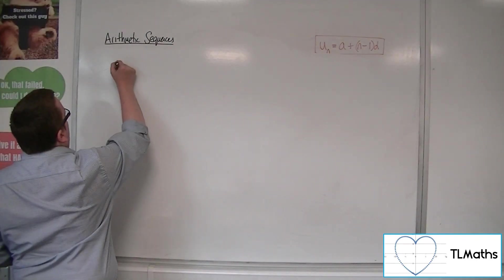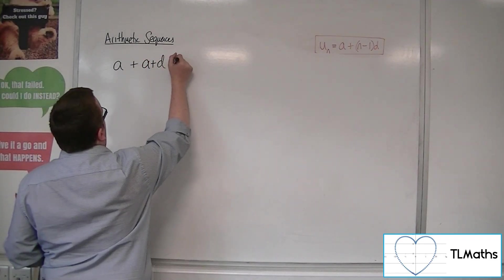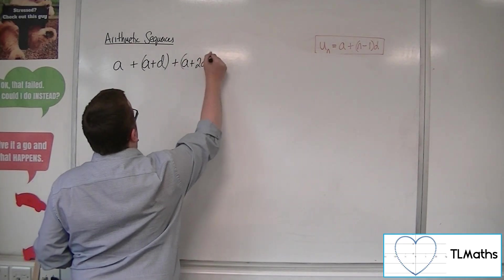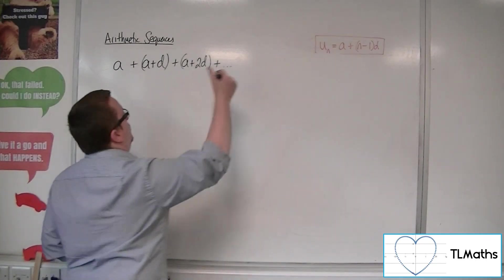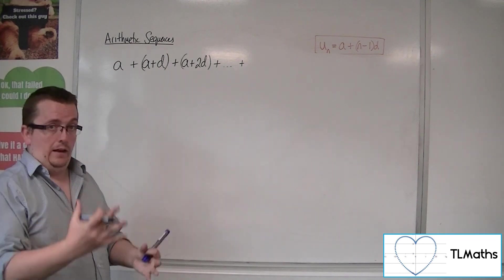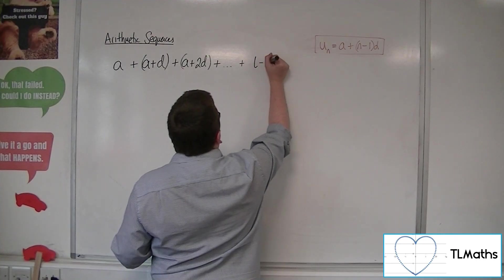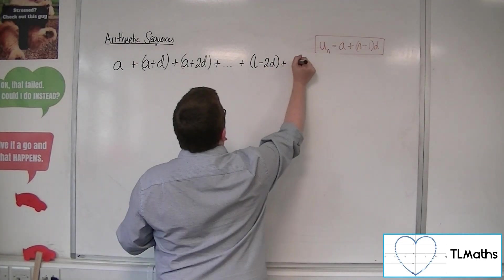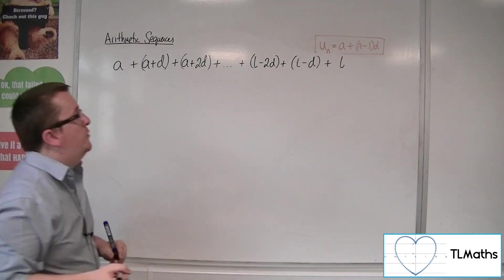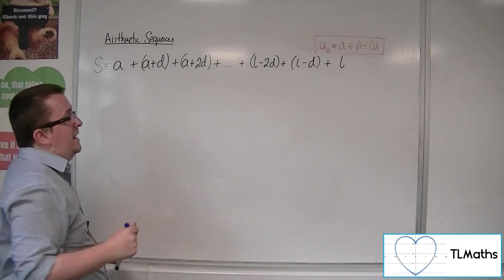So if we use a similar method, I'd have the first term a, then the next term would be a + d, then the next term, a + 2d, plus all the way up to... Now what we're going to do here is we're going to call the last term in the sequence l. So if I write down that I'm 2 down from l, so l - 2d plus l - d plus, finally, the last term in the series l. And if we call this sum S, like we did before,